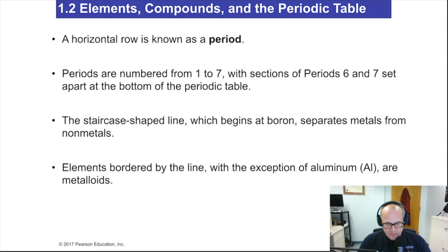Now, the horizontal row, that's known as the period or periods. The periods are numbered 1 through 7. So down the left-hand side you'll see the numbers 1 through 7. The periods 6 and 7 have what they call a set-apart or a set-down. Those elements are unique and special. They're known as the lanthanides and the actinides. We're not going to concern ourselves with those at all.